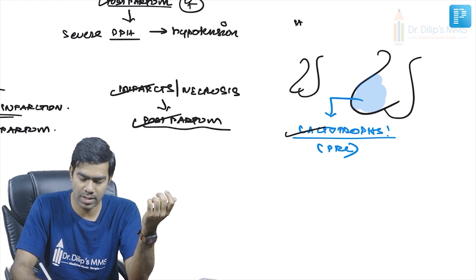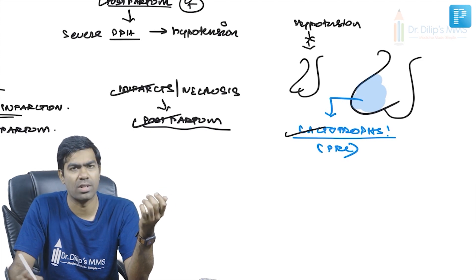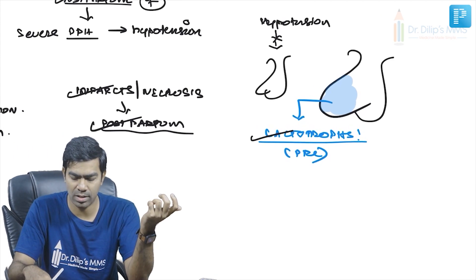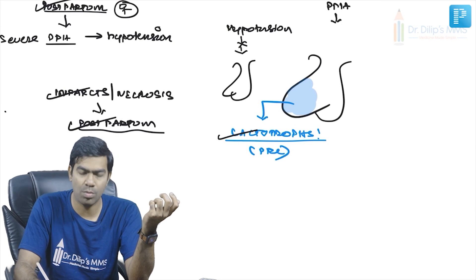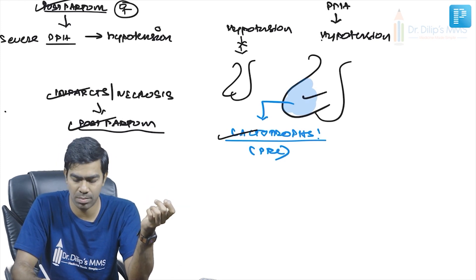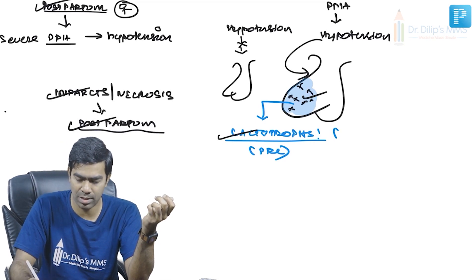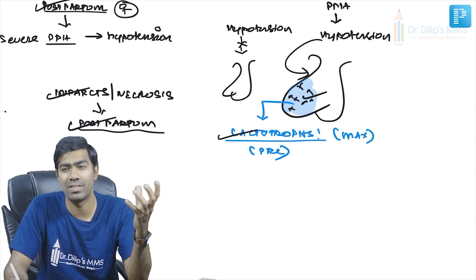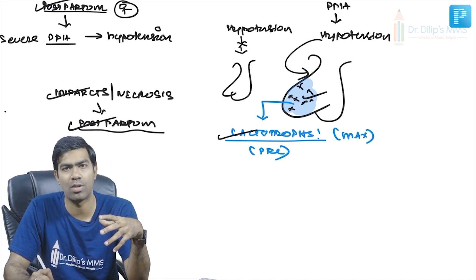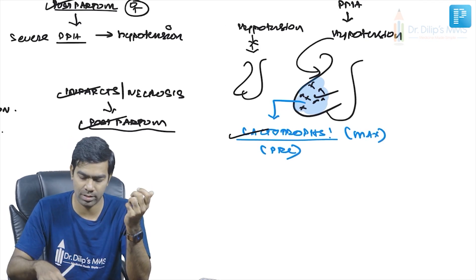In a normal patient, hypotension and shock have very little effect on the pituitary. But in a postpartum woman, hypotension from postpartum hemorrhage is very significant because the hypertrophied pituitary needs a very high blood supply. Compromise of that blood supply leads to infarction and necrosis, with the lactotrophs being maximally affected. This is a very subacute process.